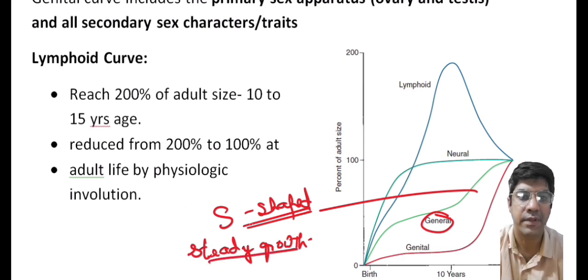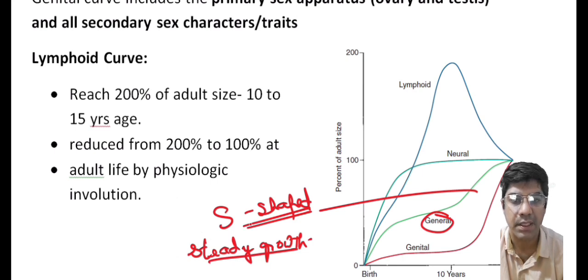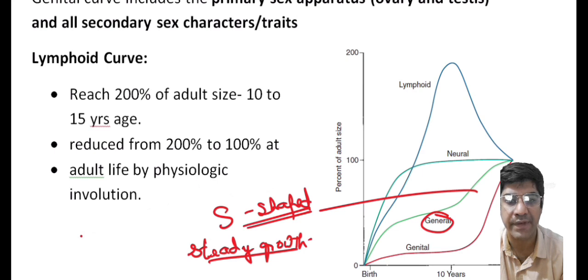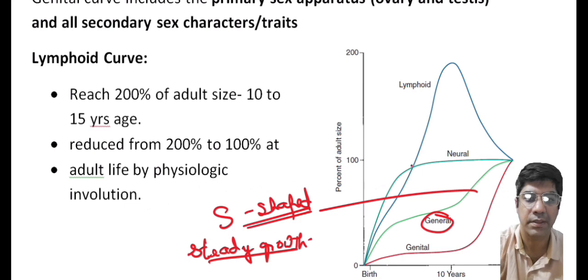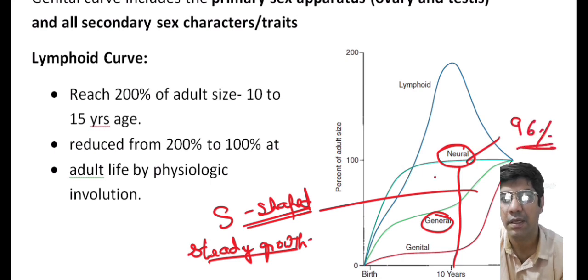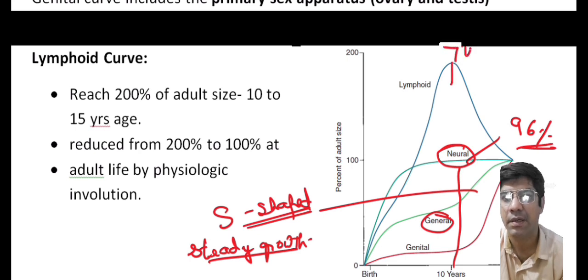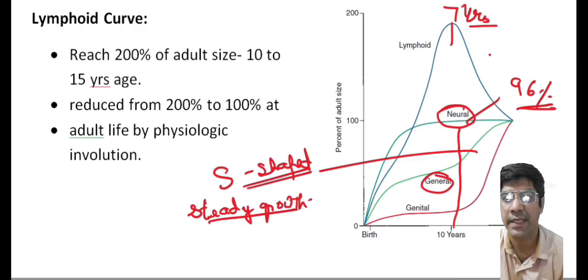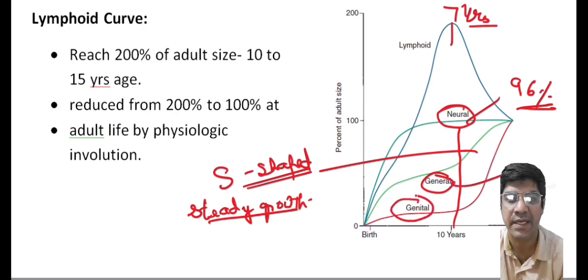The genital curve relates to the primary sex apparatus and all secondary sexual characteristics. It shows a small rise in the first year of life, becomes dormant around the age of 10, and then experiences rapid acceleration during adolescence. The neural tissue — brain and spinal cord — reaches 90 percent of growth by age six and 96 percent by age ten. Lymphoid tissue reaches its maximum around age seven and continues to proliferate beyond this point, then shrinks after puberty.